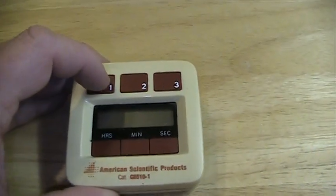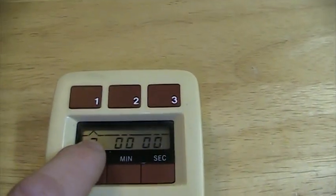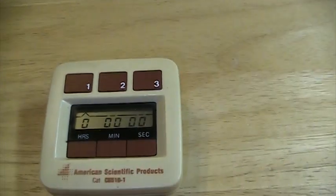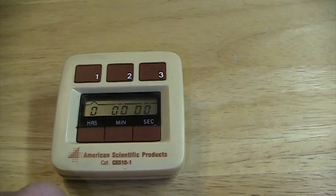The way you would start it up is you would press the button that you want to use. There is a character in the display that indicates which timer you are presently using, and you can set the hours, minutes, and seconds that you desire.